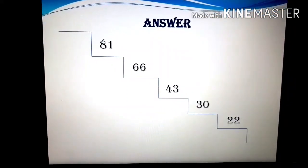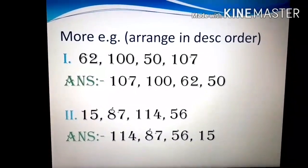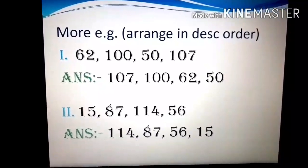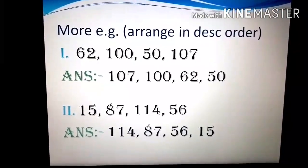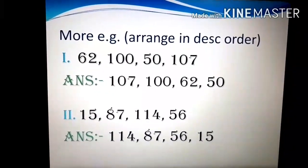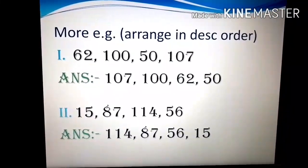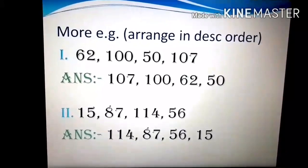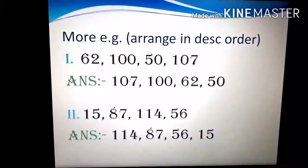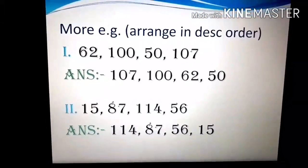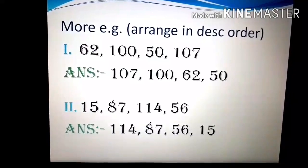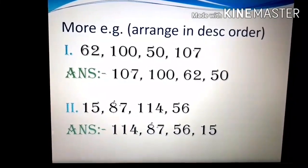Same way, another example for descending order. See here number 1: 62, 100, 50 and 107. So if we want to keep these numbers in descending order, first of all we will see the biggest number. The biggest number is 107, then 100, then 62, then 50. Same way in second number also, the numbers are 15, 87, 114 and 56. The answer is 114, 87, 56 and 15.